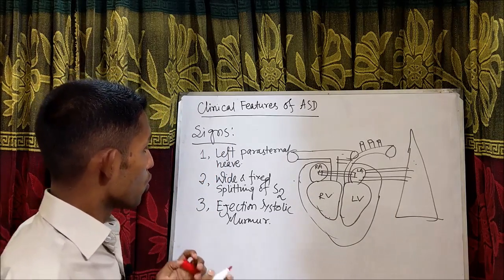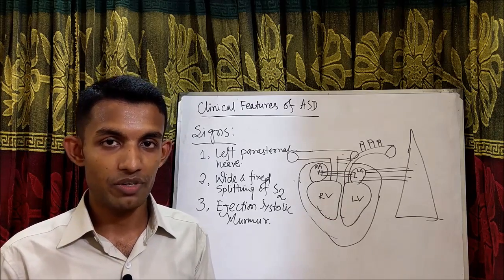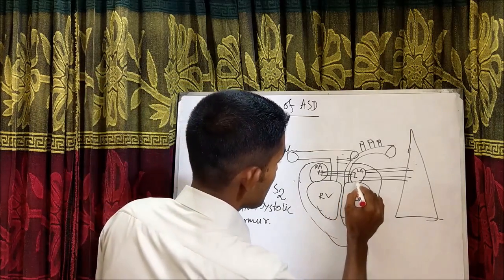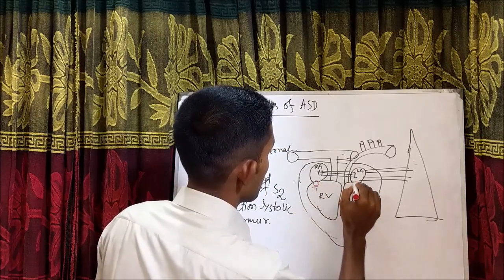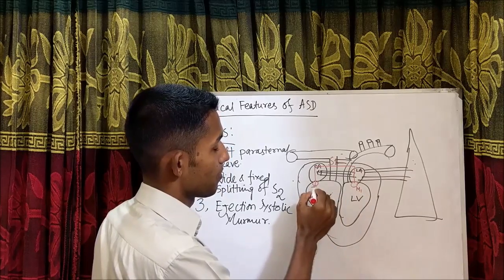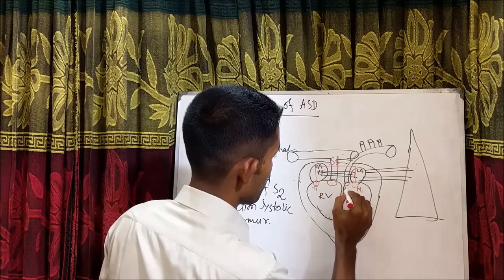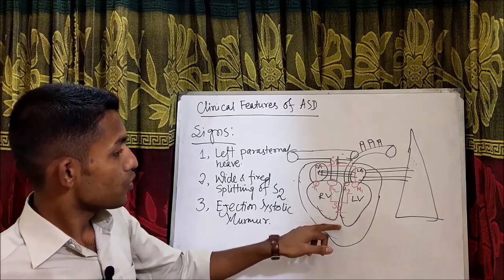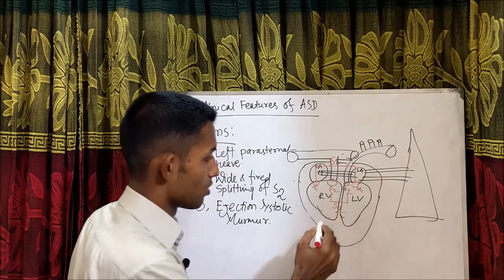Why is there wide and fixed splitting of S2? We know that S1 is due to the abrupt closure of the mitral valve and tricuspid valve — M1 and T1 make S1. S2 is due to the abrupt closure of the aortic and pulmonary valves — A2 and P2 make S2. So S2 is due to the closure of the aortic valve and the pulmonary valve.